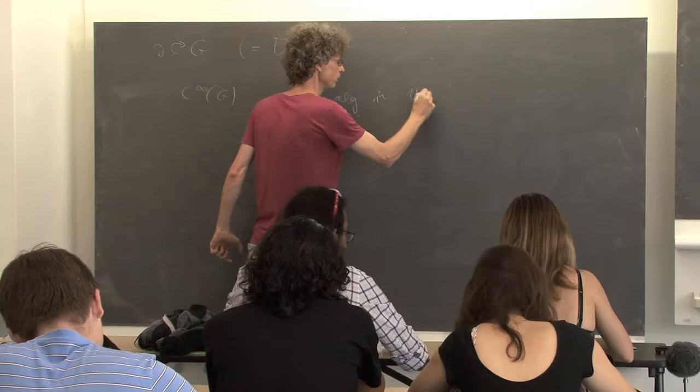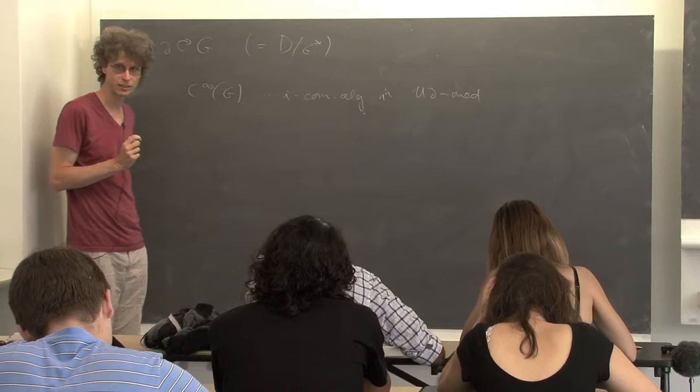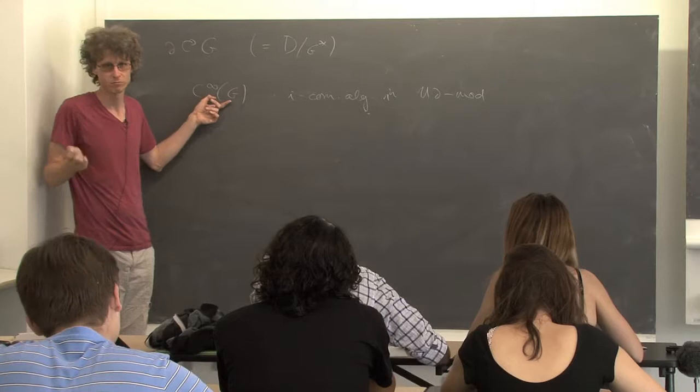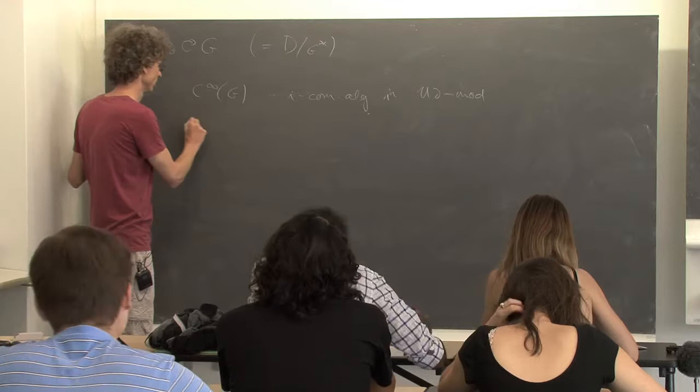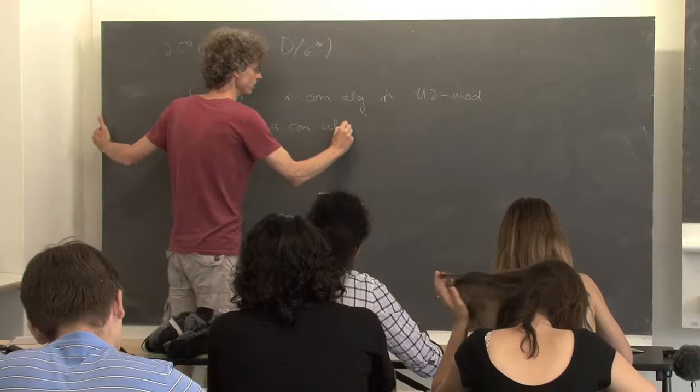And so this guy is infinitesimally commutative — an algebra in this category of UD-mod. It was the thing which implies that the same algebra with the same product and the same unit is also a commutative algebra — the same thing is a commutative algebra in this Drinfeld double category.